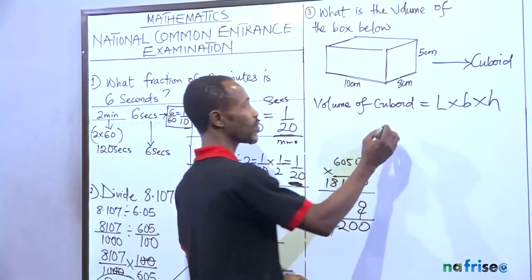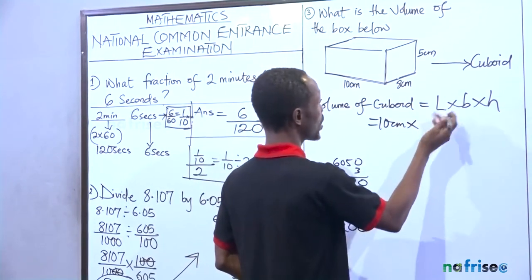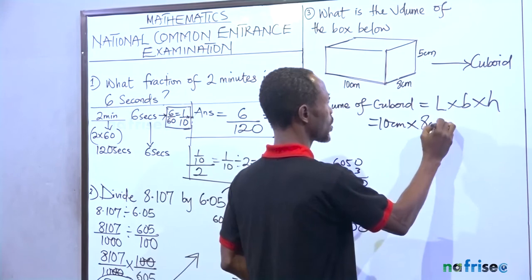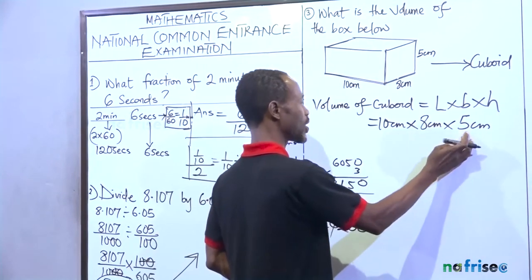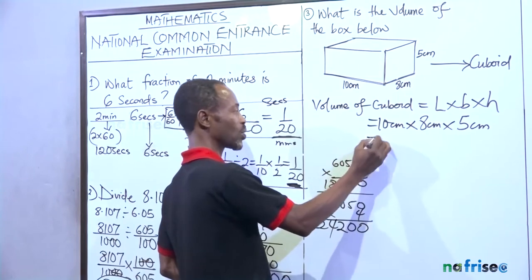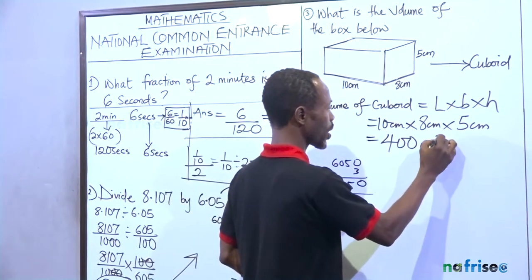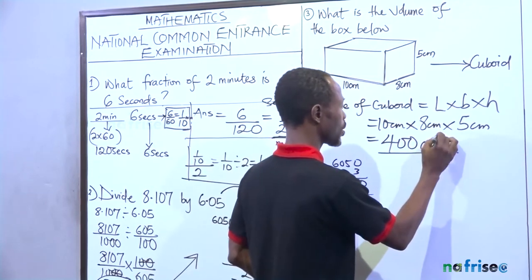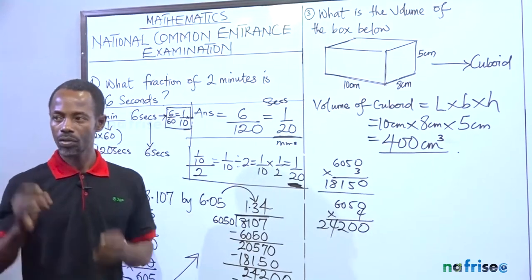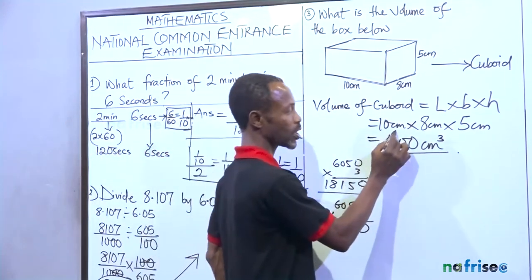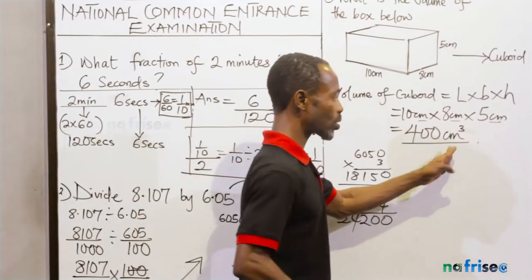Volume of cuboid equals length times breadth times height. Don't forget that to the senior classes when you get to your JSS1 and JSS2 and the rest of them. So they say, what is the volume of a cuboid? It is length times breadth times height. It's still the same in the senior class. So here, given the length, which is the longest part, will give us 10 centimeter times breadth, 8 centimeter times height, 5 centimeter. So we use 5 times 8, that's 40. 40 times 10, that's 400.